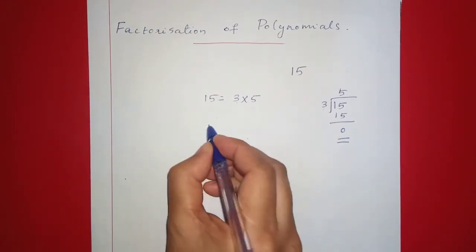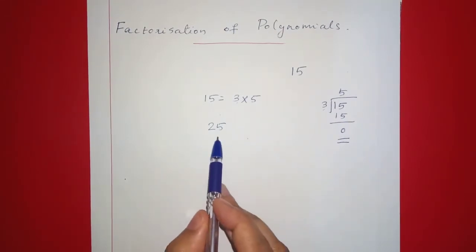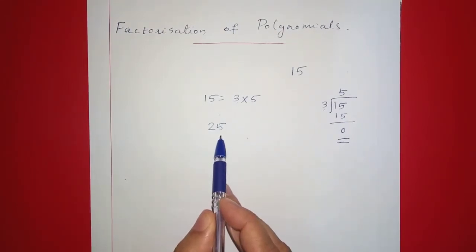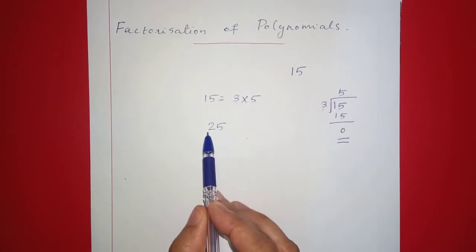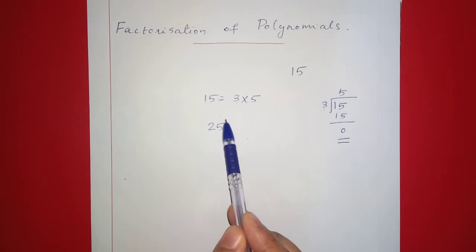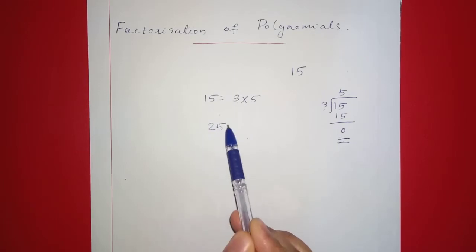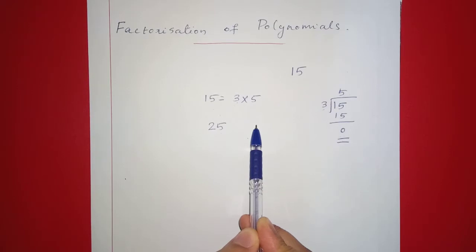What about 25? Are there any factors? 5 into 5 is 25, so that means we divide 25 by 5. This means we factor in polynomials the same way.